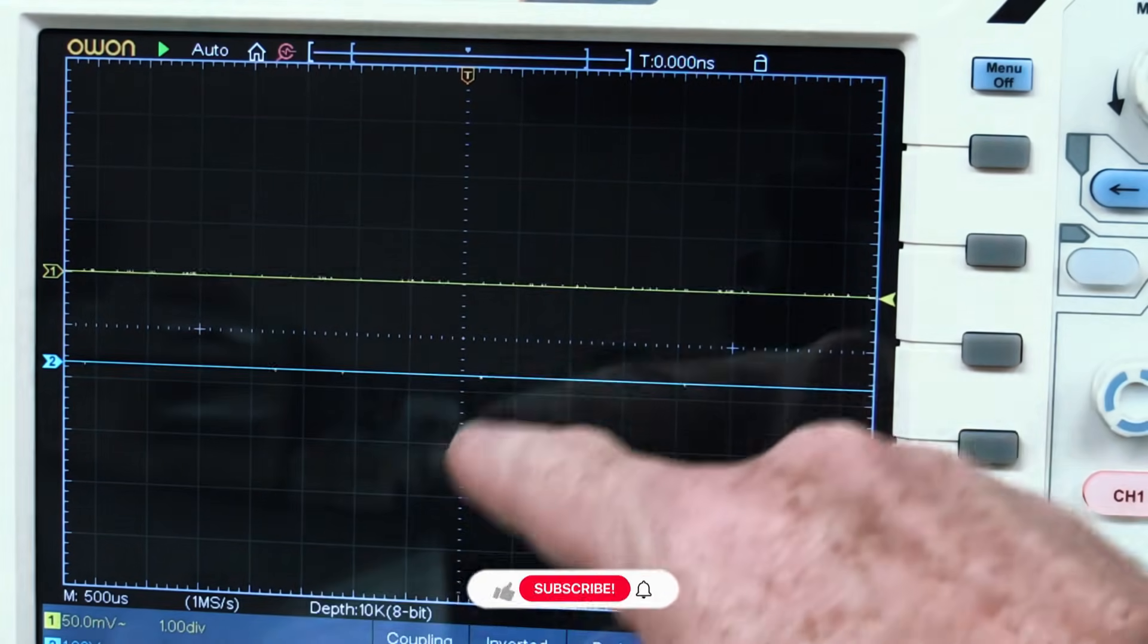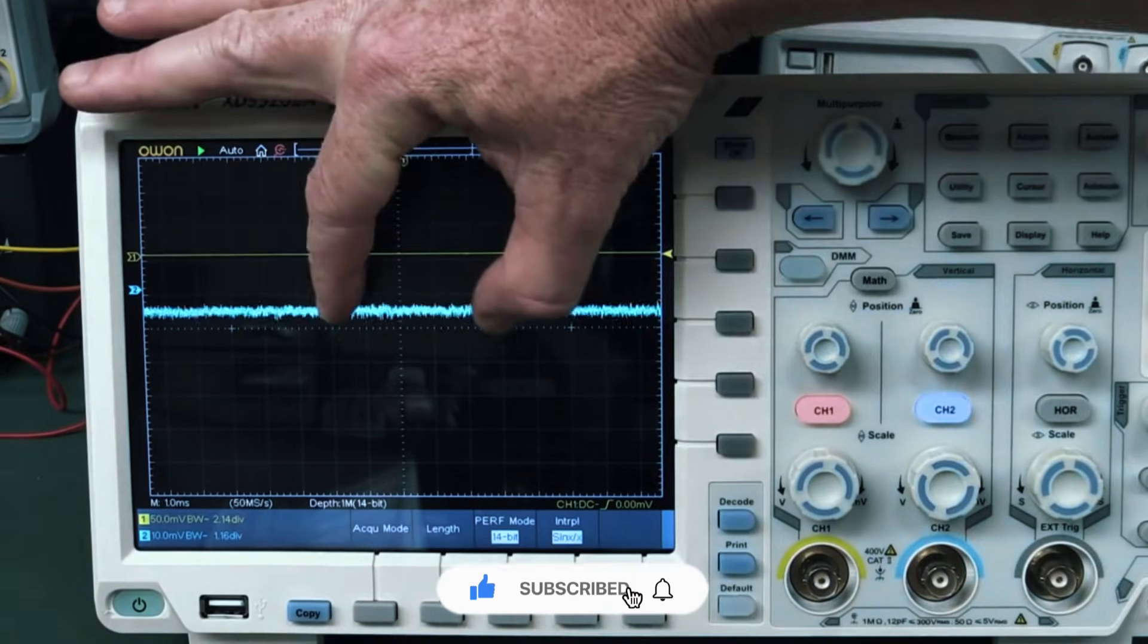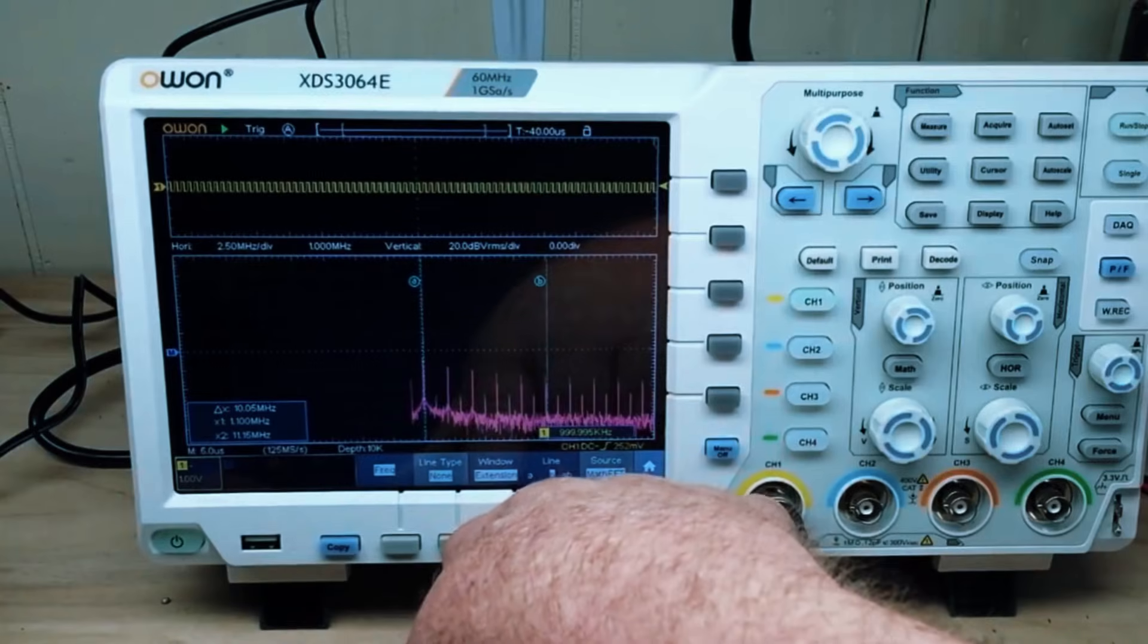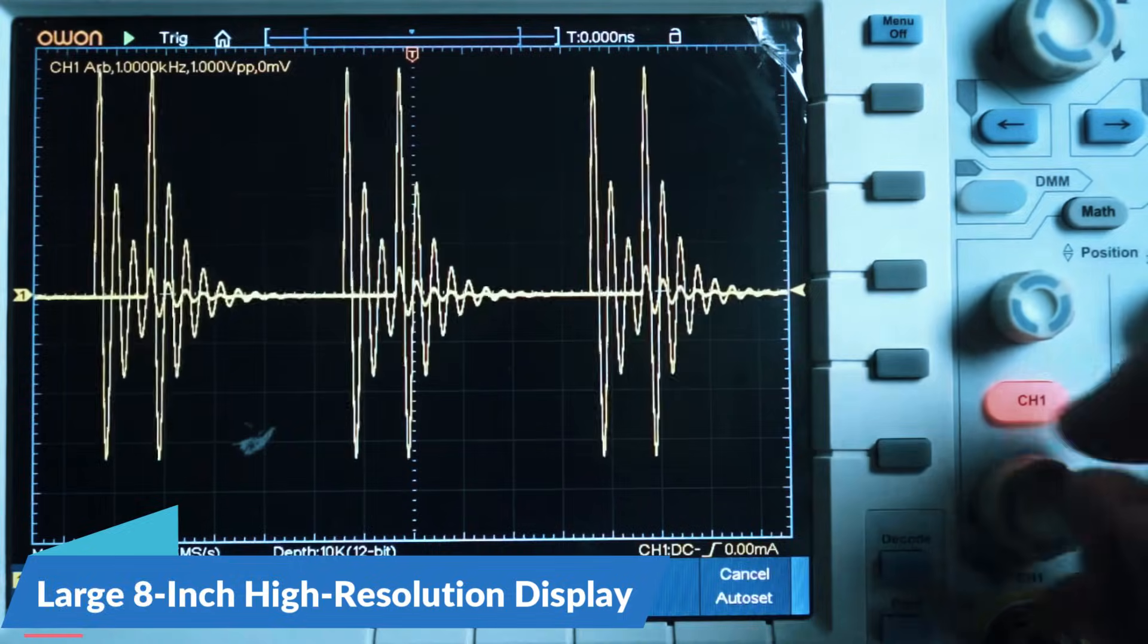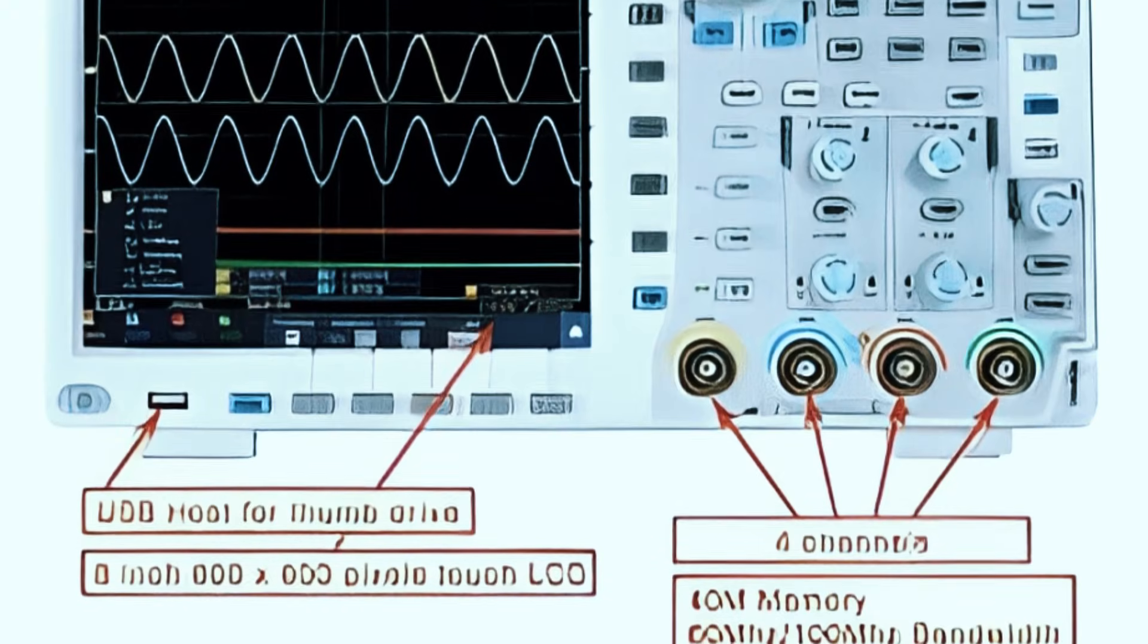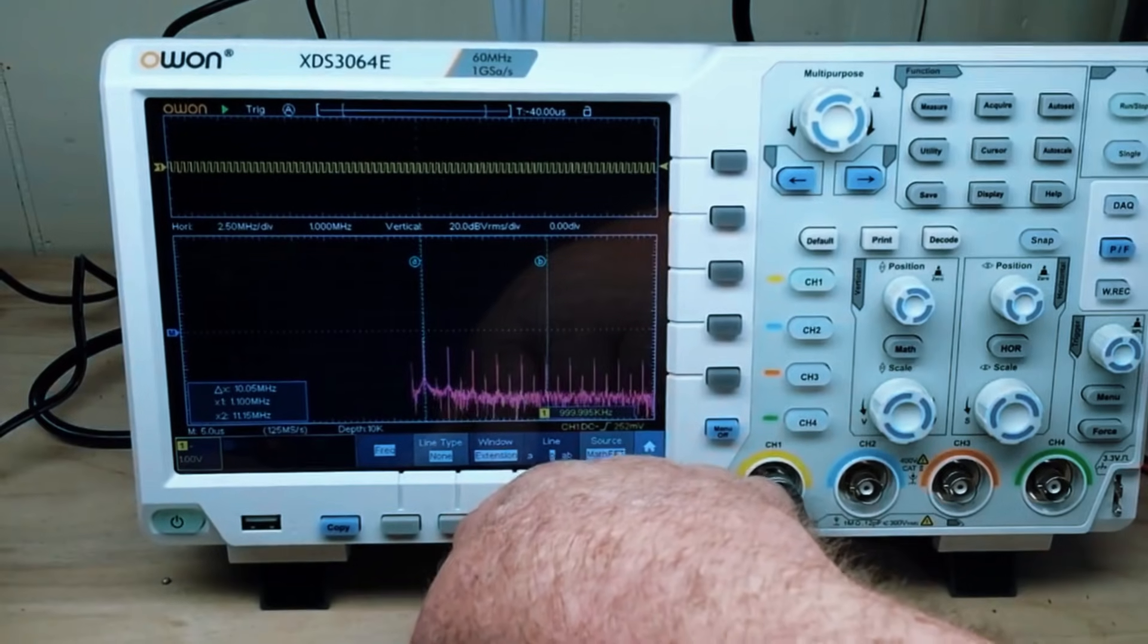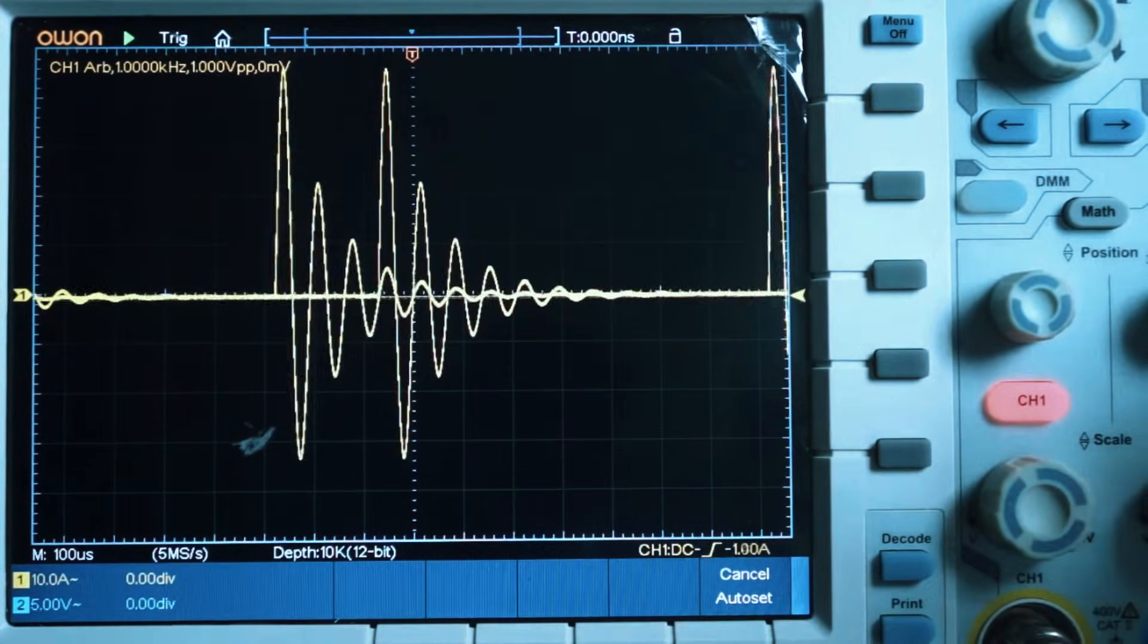The higher resolution on the XDS-3204E results in cleaner, more accurate signal displays, which is crucial for precision measurements. The oscilloscope also comes with a large 8-inch high-resolution display ensuring that waveforms are easy to read and analyze. And for added convenience, it includes WiFi and USB connectivity, allowing users to remotely monitor and export data without being tethered to the device, an incredibly useful feature for professionals working in laboratories or industrial environments.